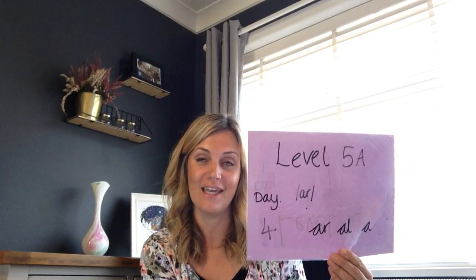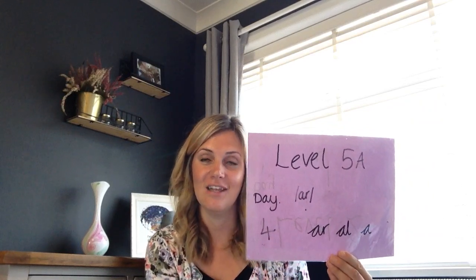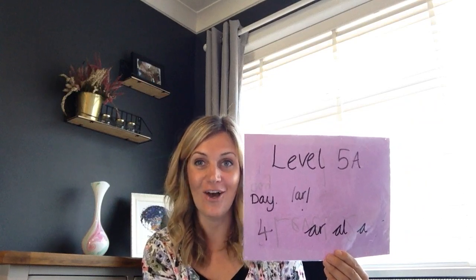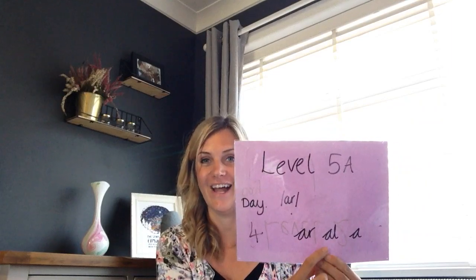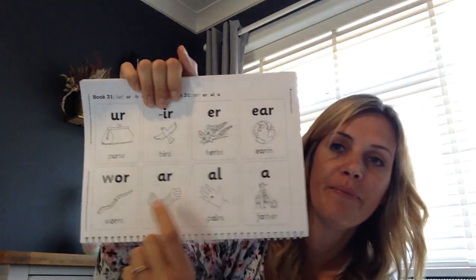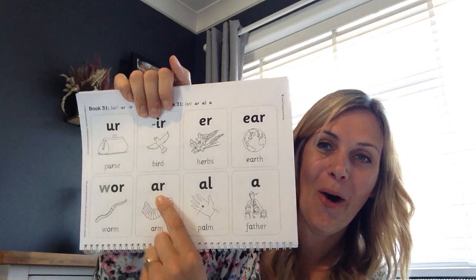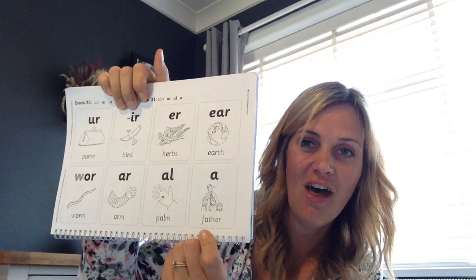Hello everybody and welcome to level 5 day 4. Today we're going to be looking at alternative ways to make the R sound. Now we already know R as in arm, and today we're going to be looking at R as in arm, R as in palm, and R as in father. They look a little bit like this: R as in arm, R as in palm, R as in father.